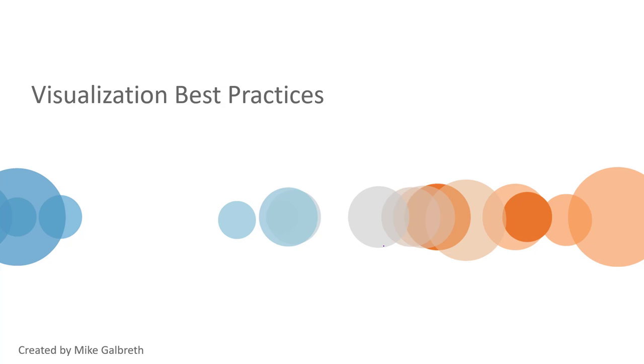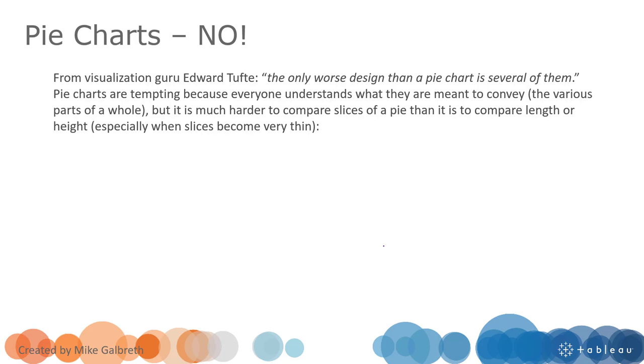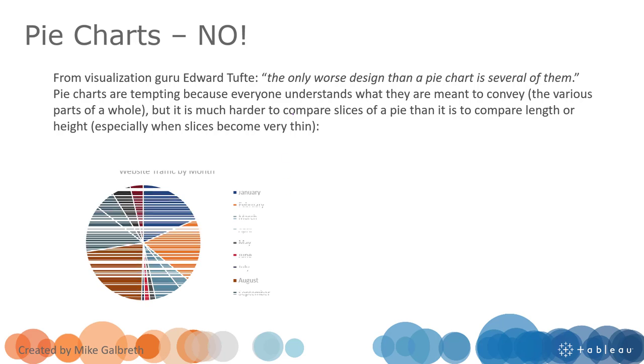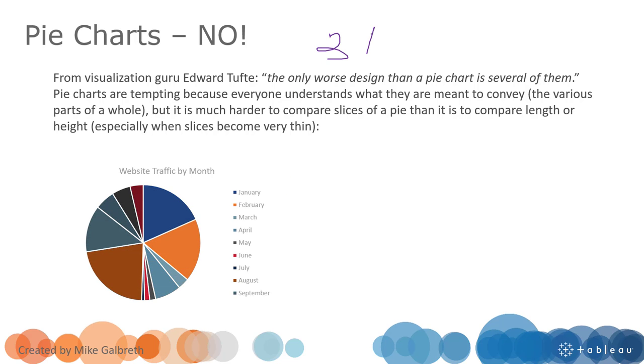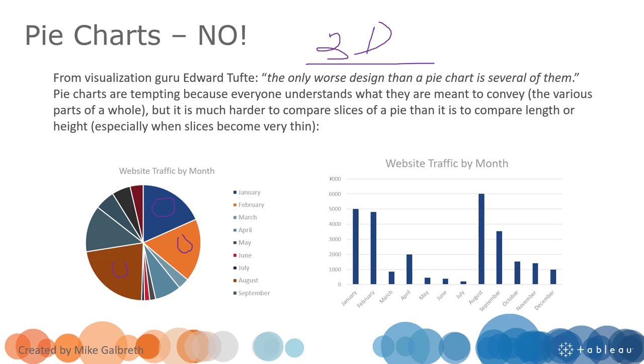Here comes some visualization best practices. Number one: do not use pie charts. The same reason as do not use 3D visualizations—people tend to underestimate the values represented on those pie charts and 3D visualizations. Try to use a bar chart instead.